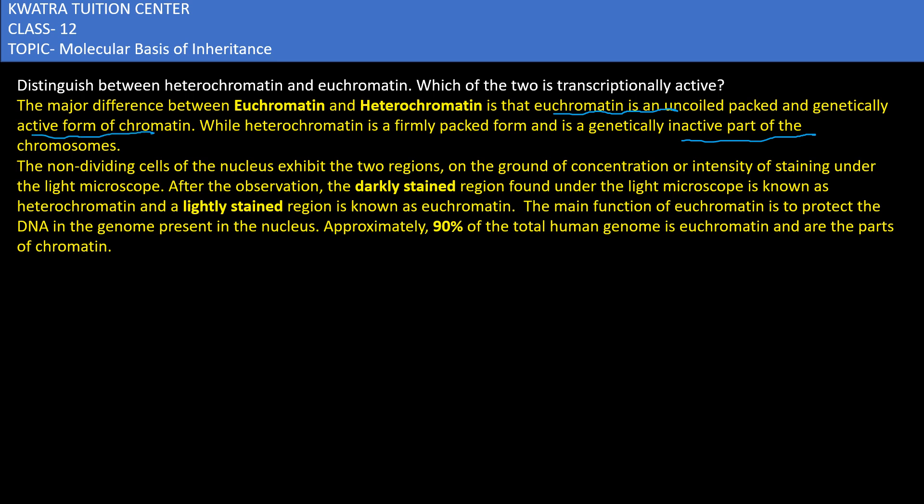Non-dividing cells exhibit two regions on the basis of intensity of staining under the light microscope. When we observe under the light microscope, the darkly stained region is called heterochromatin, and the lightly stained region is called euchromatin.